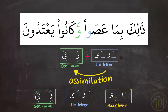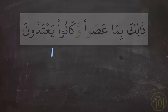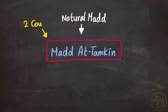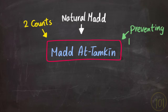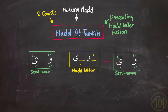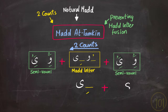So مد التمكين is a type of natural مد, which means that it is extended for two counts, and its main function is ensuring the proper elongation of مد letters and preventing them from being fused into one another. We apply it when a مد letter is followed or preceded by a semi-vowel, or when يا as a مد letter is preceded by a يا with شدة.